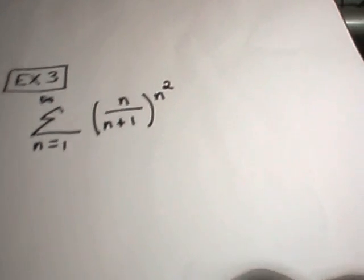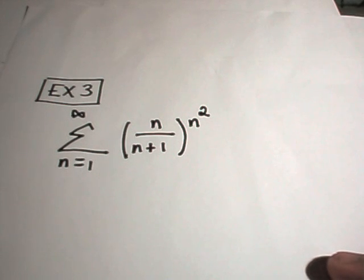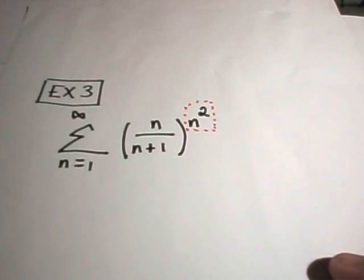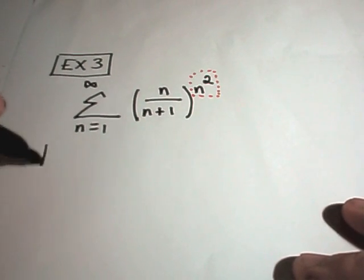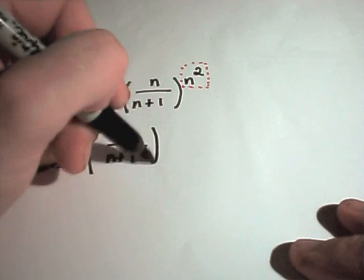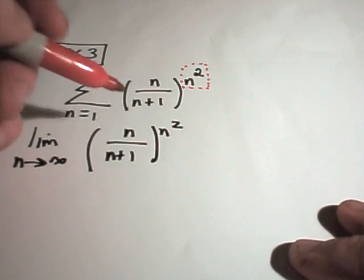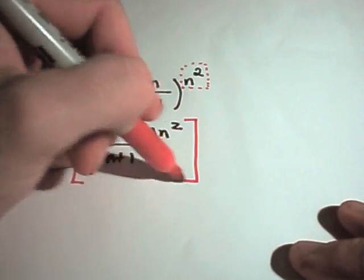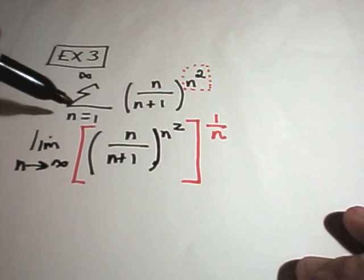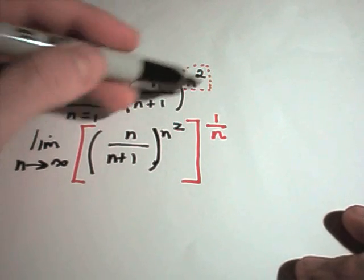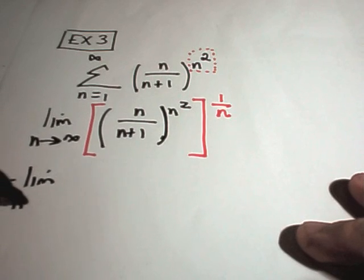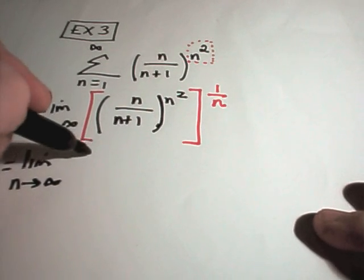So here we have n over n plus 1, all being raised to the n squared. I see this power of n. I think maybe a good idea would be to use the root test. And with a lot of series, there may be multiple ways to do it. So if you see another way to do some of these, that's certainly possible. So there's my n over n plus 1 raised to the n squared. And I'm taking the nth root of this stuff, which is the same thing as to the 1 over n power. I'm leaving off the absolute value, because I am recognizing for values of n greater than 1, everything's going to be positive anyway. But if you had like an alternating series, you would still be allowed to do this, just remove the negative values.